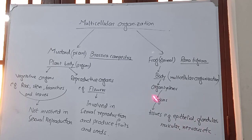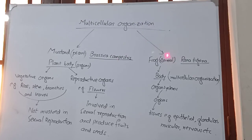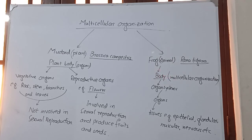So this was all about the multicellular organization, which is found in the mustard plant and the frog. I hope you understood. Thank you very much.